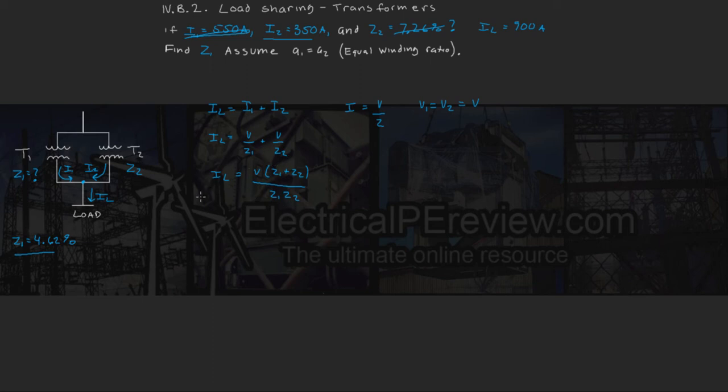And we can say that IL equals I2 times Z1 plus Z2 over Z1.